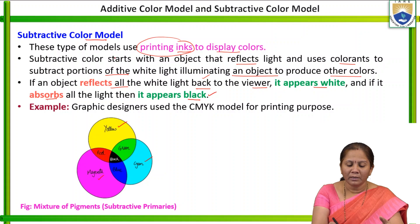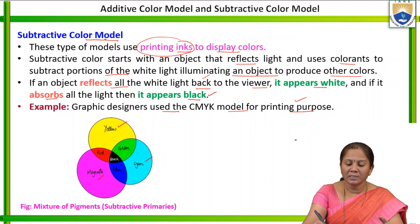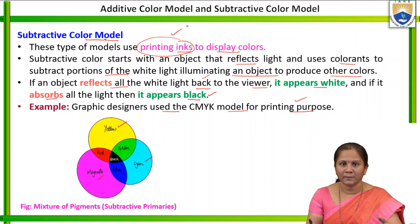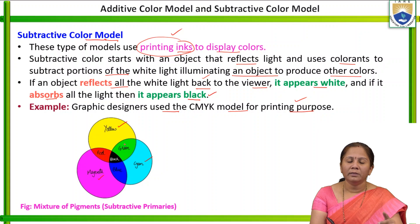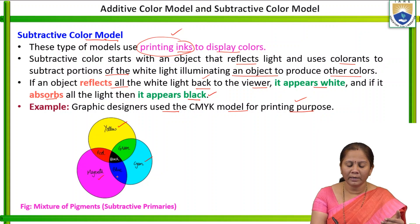The subtractive color model is used in graphic design and printing, where the CMYK color model is used for printing purpose. Printing inks are used to display different colors in the printout. In the additive model, red, green, and blue generate other colors; here, secondary colors — cyan, magenta, and yellow — are used to generate red, green, and blue. When these three secondary colors are added, black is obtained.